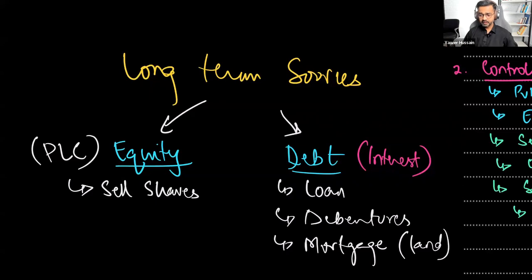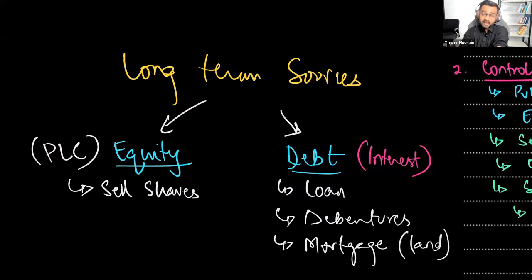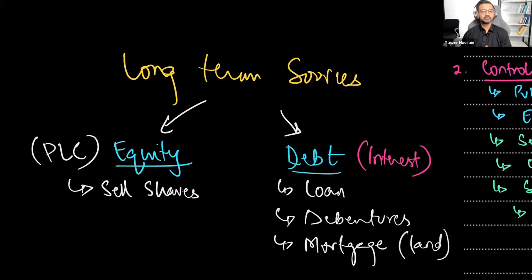On crowdfunding: it involves small amounts from a lot of people. For $1.5 million, imagine how many people you'd need. Crowdfunding is usually for new businesses with unique ideas — this isn't new or unique. A venture capitalist would also involve losing control. So a loan or mortgage would fit best in this question.